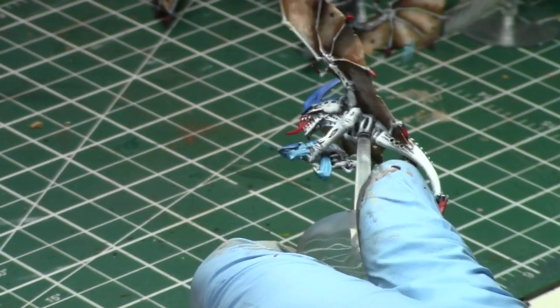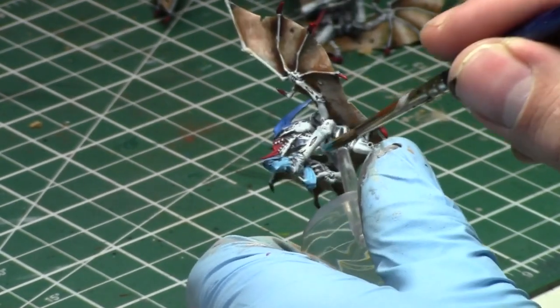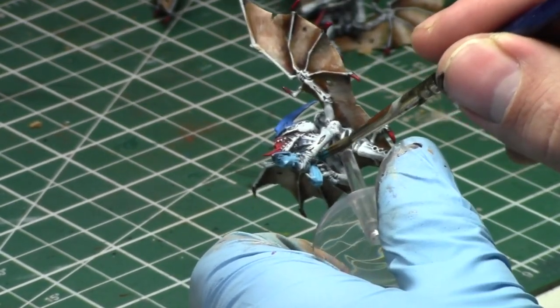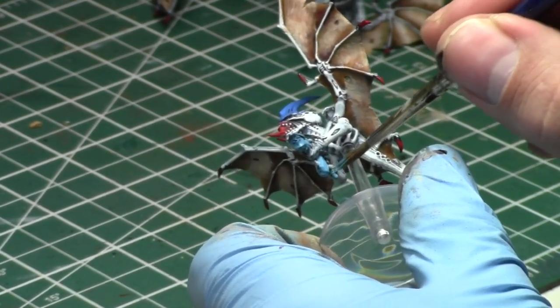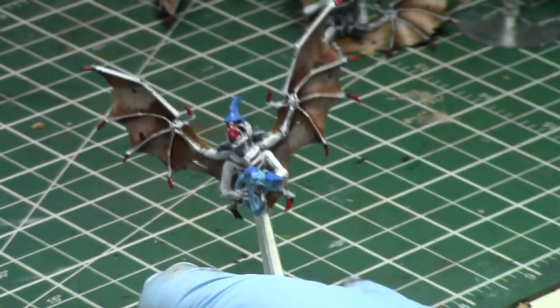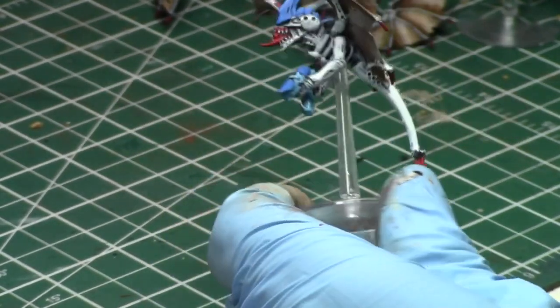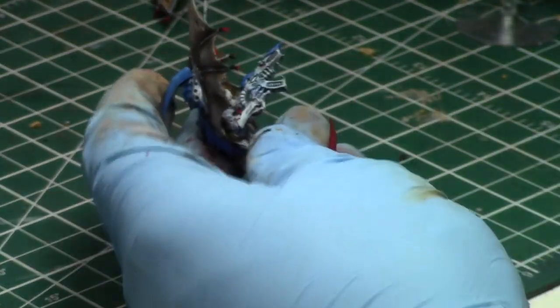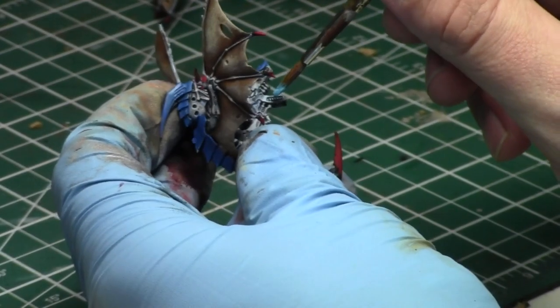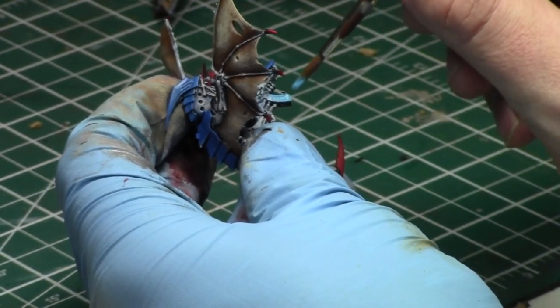You saw a lot of them. Most Tyranid lists either had one of them, one of them being the Dimacharon, or the barbed Hierodule. Both of them are very competitive at 1850. I know somebody did mention to me, one of my viewers did mention to me that he felt the Dimacharon was good.